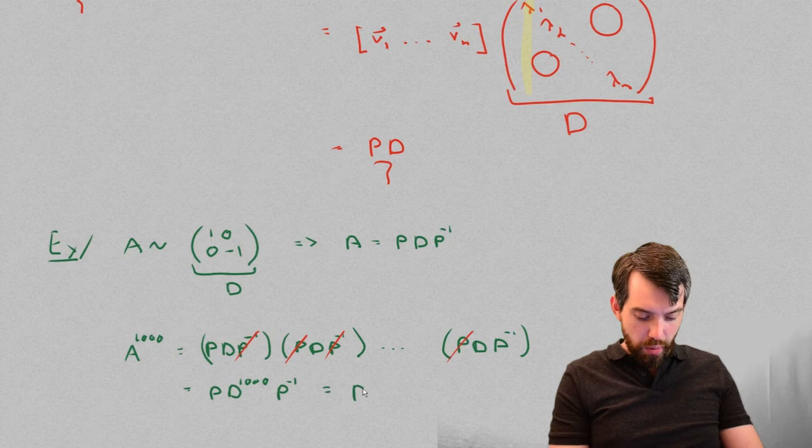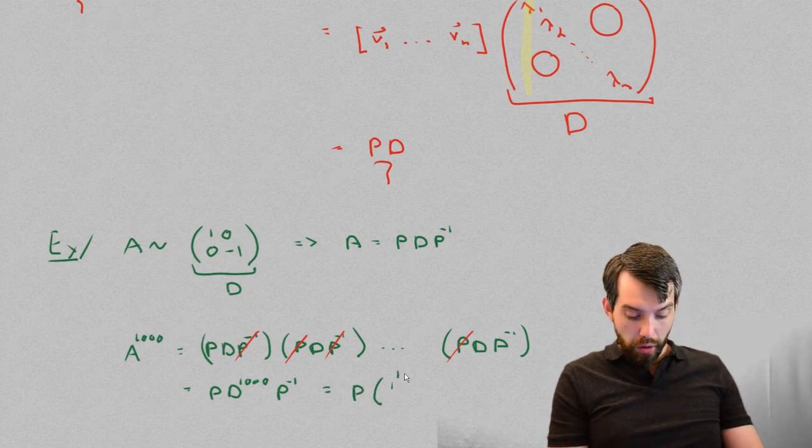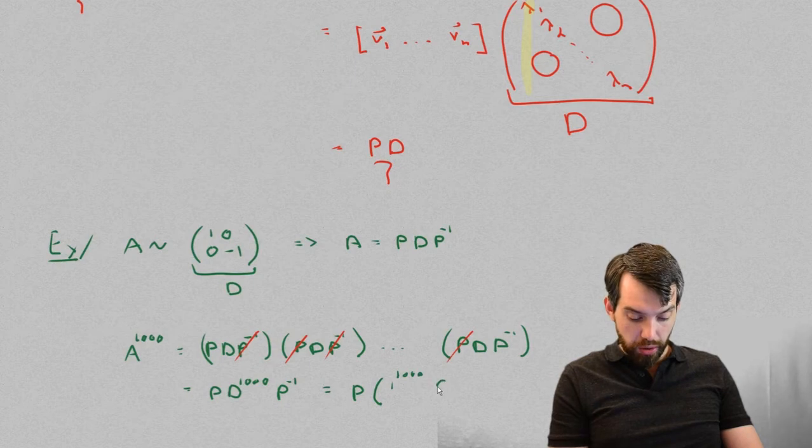So, in other words, this is just whatever the P is, and I've never told you, 1 all the way to the power of 1,000, 0, 0, and minus 1 all to the power of 1,000.